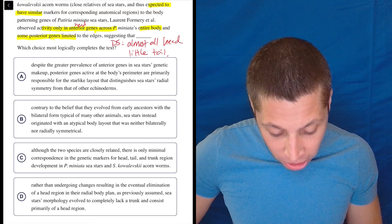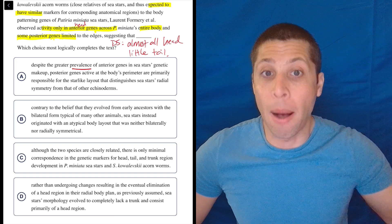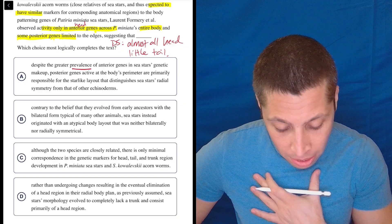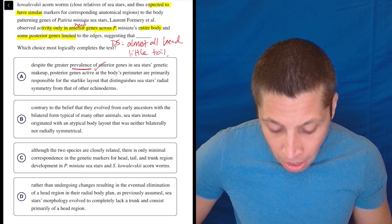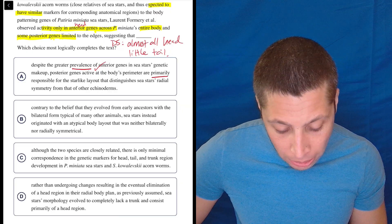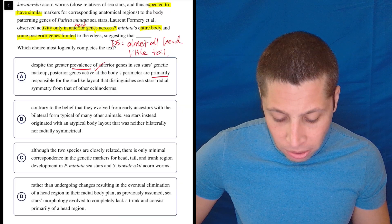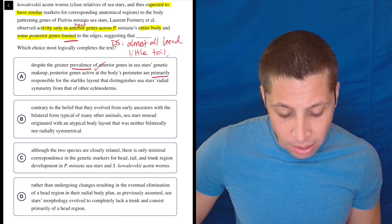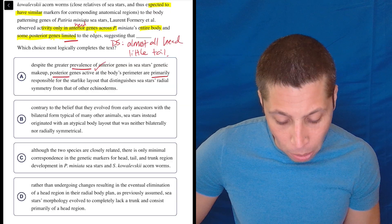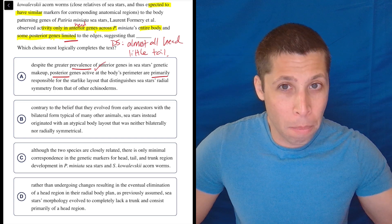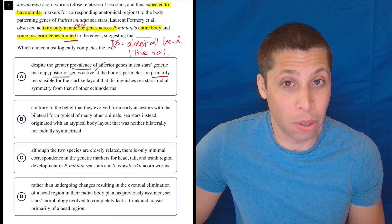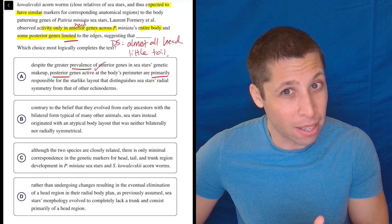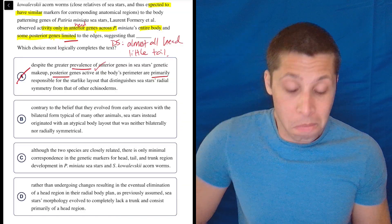All right, so despite the greater prevalence of anterior genes in sea star's genetic makeup. So prevalence means how common it is. That's another one of those words you have to know regardless of the passage, right? Prevalent means, you know, how common it is. So there's a lot of head genes. So that checks out. Posterior genes active at the body's perimeter are primarily responsible for the star-like layout that distinguishes sea star's radial symmetry from that of other echinoderms. Well, it seems to be saying that the tail is limited, right? So this is making the tail, right, the posterior genes primarily responsible. But if we're saying they're limited, I don't love that, right? It's almost like we're saying the head genes are good, are important, and the tail genes are bad or unimportant. So this is trying to say maybe that the tail genes are important. This seems to be wrong. So cross it out.